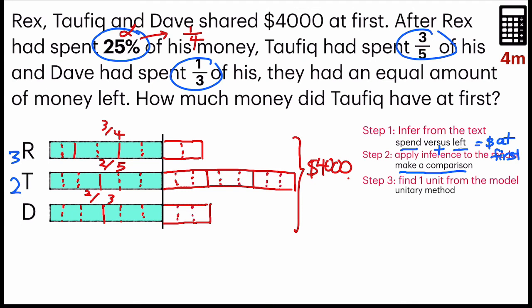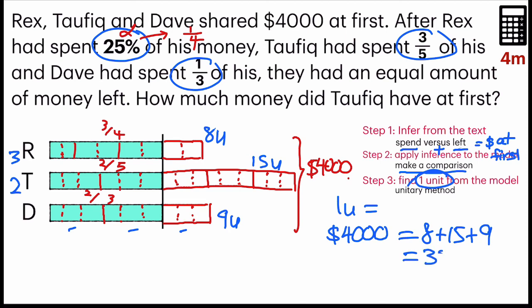And let's count the number of units that they have. 3, 6, 9. So 9 units for Dave, 3, 6, 9, 12, 15 units for Taufik. And 2, 4, 6, 8, 8 units for Rex. Now we can do the next step, which is to find 1 unit. We know that $4,000 is equal to 8 plus 15 plus 9, which is equal to 32 units. But we have to find 1 unit. So what do we do? We will take $4,000 divided by 32, which we will get 125.